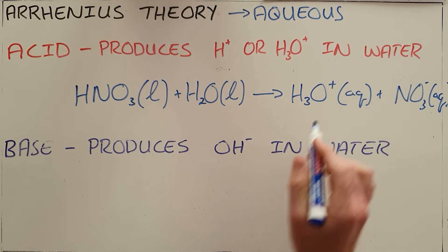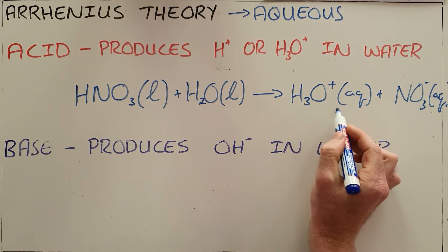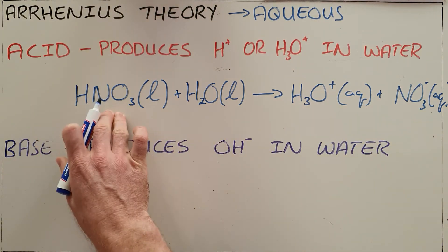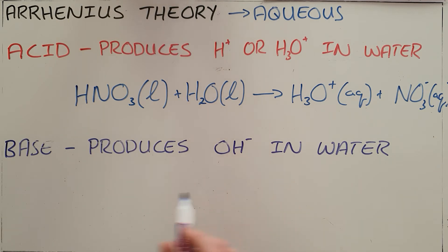So as we can see, an Arrhenius acid has produced hydronium ions, therefore HNO3 is an Arrhenius acid. So by the similar definition we say that an Arrhenius base is a substance that produces hydroxide ions in water.